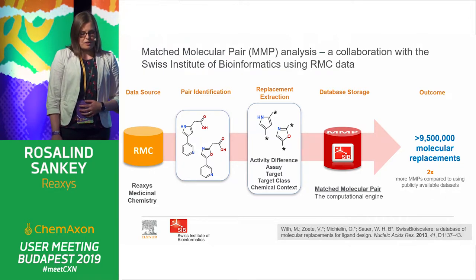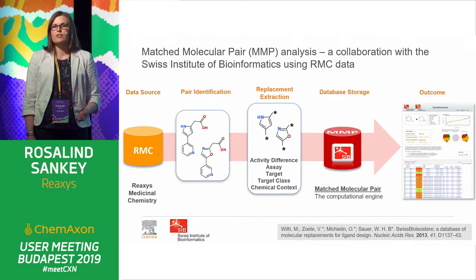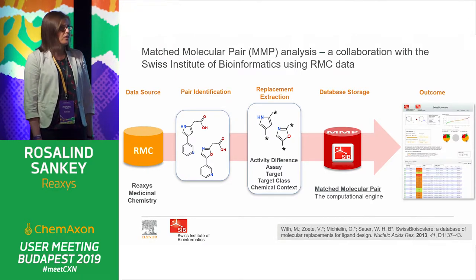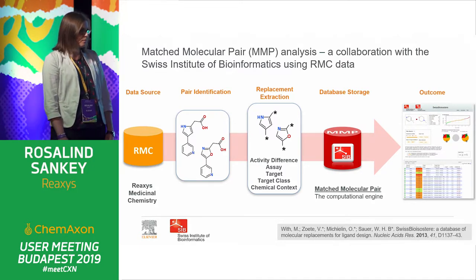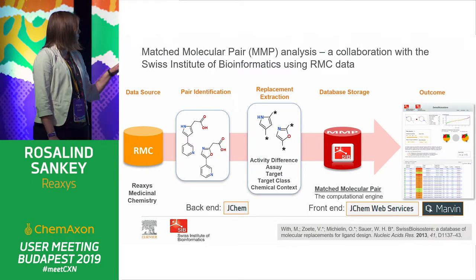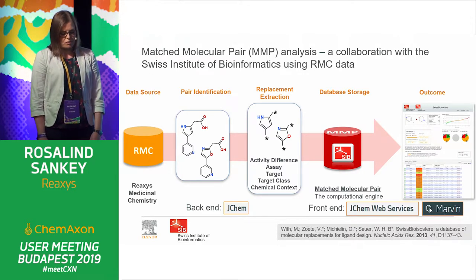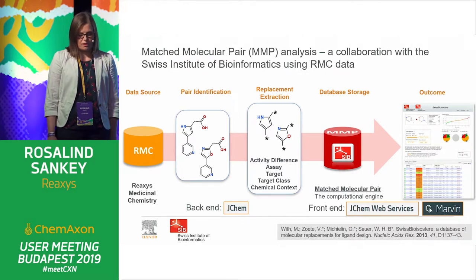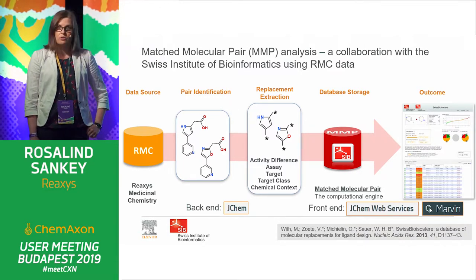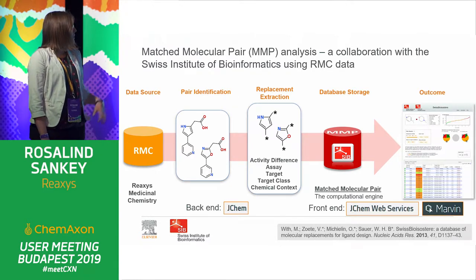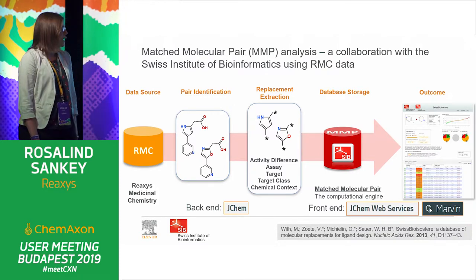We were really pleased to see that we got over 9.5 million molecular replacements from this system — two times more than any commercially available data sets. We wanted to actually put this in the hands of our researchers to test, so we created some web applications with the SIB and handed these out to researchers to test and validate. Along this step, we have ChemAxon technology embedded: JChem Suite for handling the molecules and fragments and calculating physical chemical properties and descriptors, MarvinJS Sketcher front and centre in the applications, and JChem Web Services for molecular image handling.